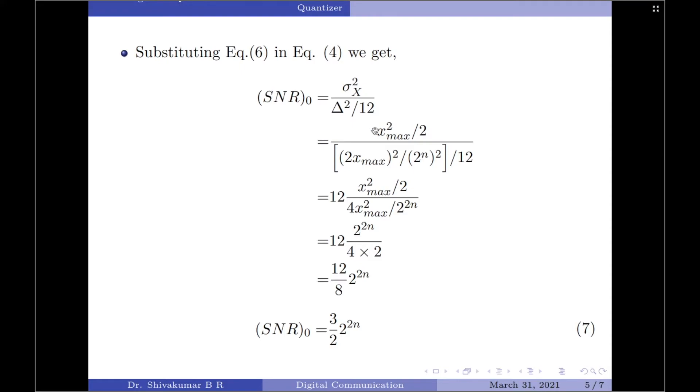Let us now simplify this part. I will take 12 to the numerator first. So, it will be 12 into x_max²/2 in the numerator divided by, in the denominator, we have 4x_max² divided by 2^(2n). Let us first cancel x_max² and therefore, we will have a new equation. The denominator term comes to the numerator. So, it is 2^(2n) divided by 4 multiplied by 2.